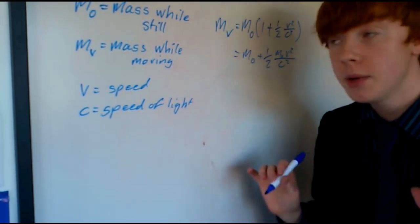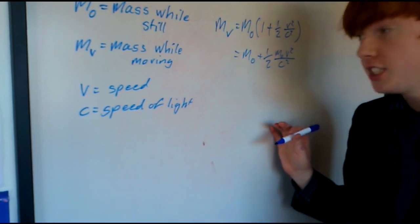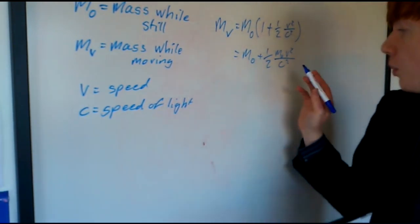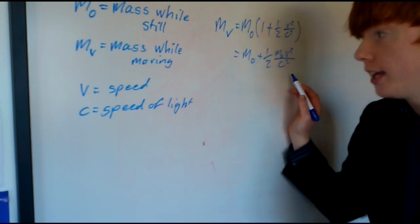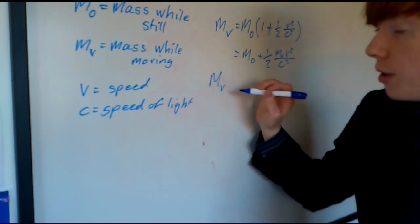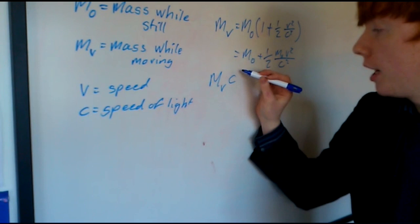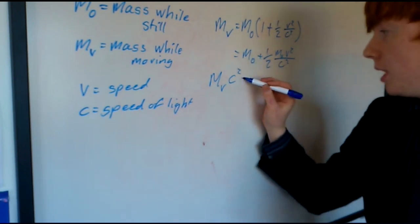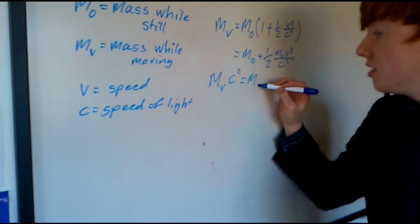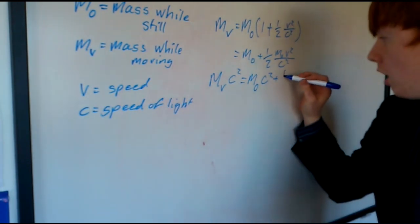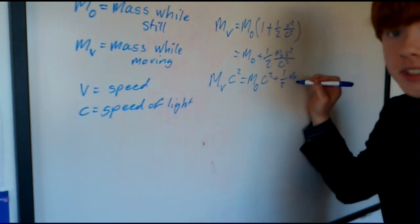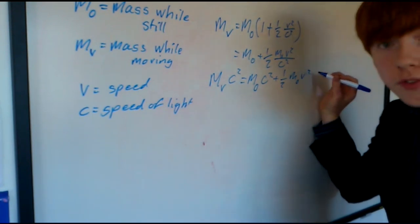And if we times that out, some of you may be able to see that we're already pretty much there. Because what we can do now is we can times everything by this speed of light squared. Meaning that we have the mass of you moving multiplied by the speed of light squared is the same as the mass of you while you're still times the speed of light squared, plus half of the mass of you still multiplied by your velocity squared.